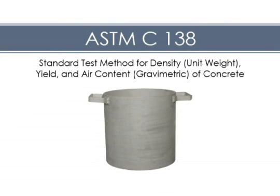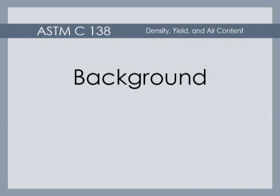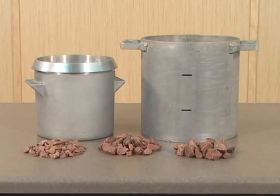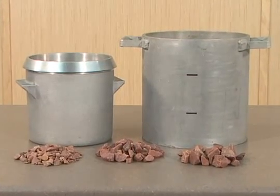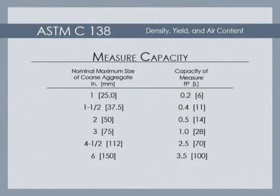This video demonstrates the proper procedures for determining the density of concrete and presents formulas for calculating yield, cement content, and gravimetric air content. The capacity of the measure used for the density test is based on the nominal maximum size of the coarse aggregate. Refer to Table 1 in the standard for guidance on selecting an appropriate sized measure for this test.